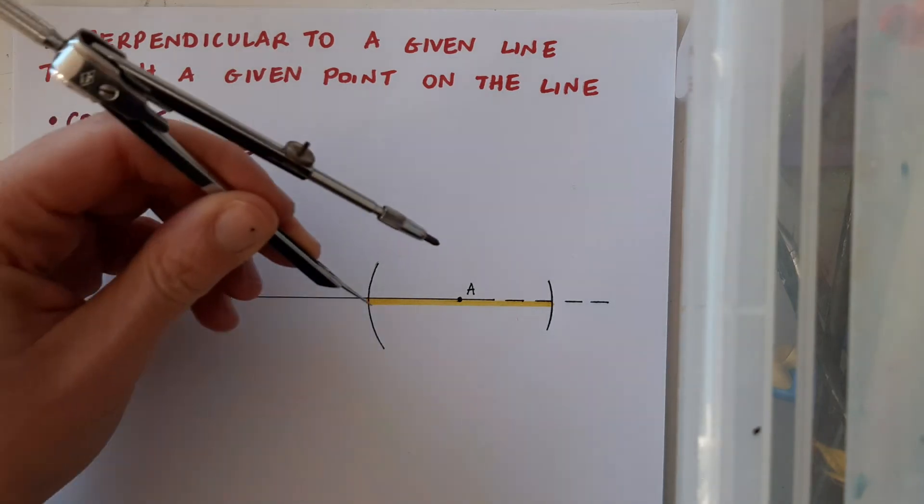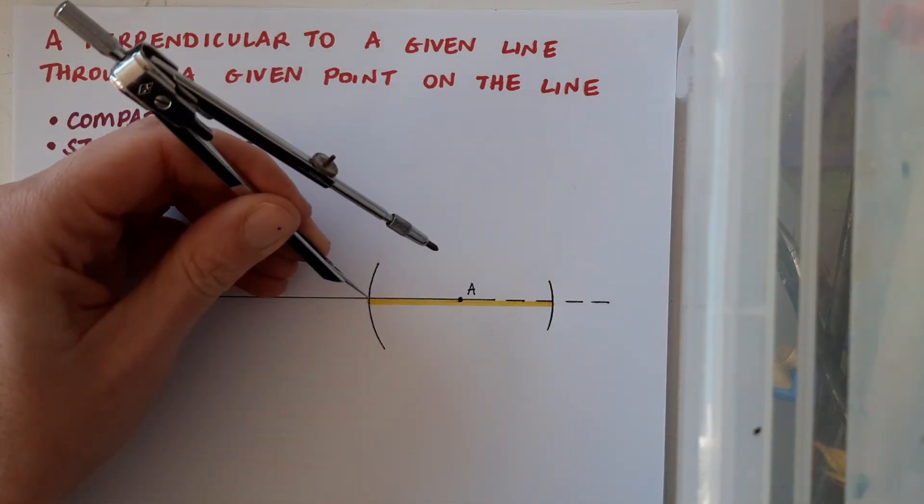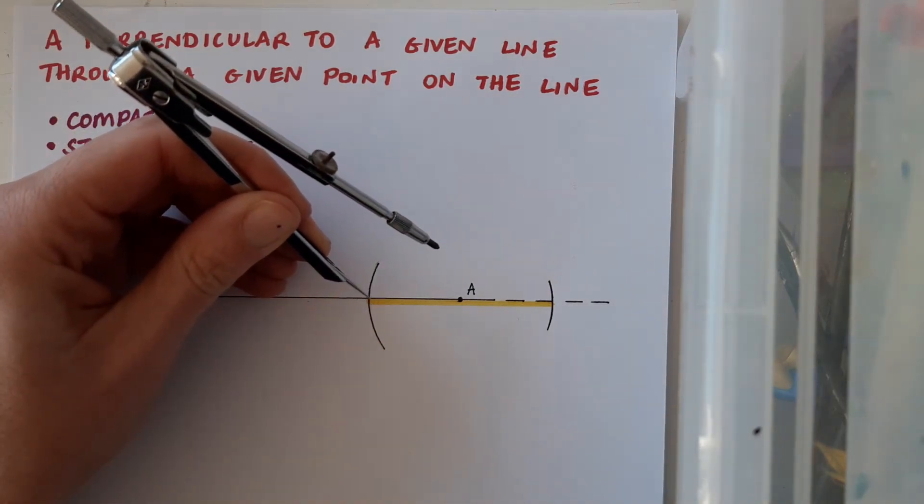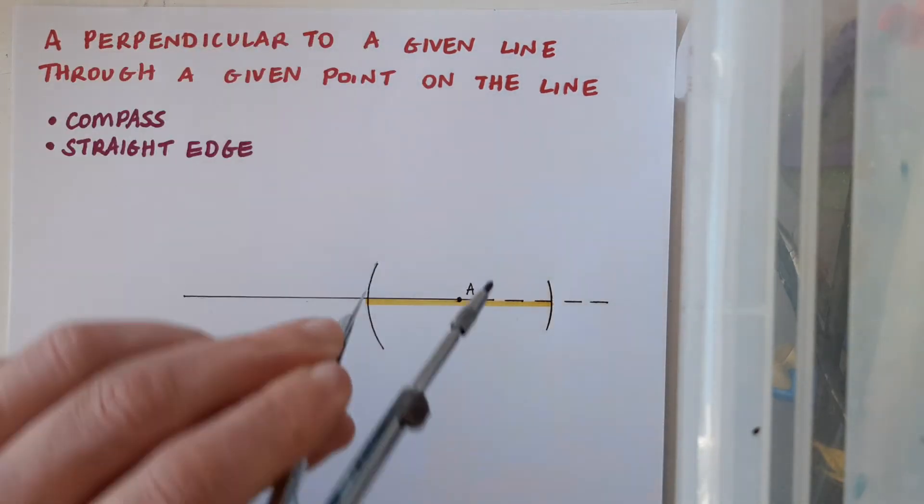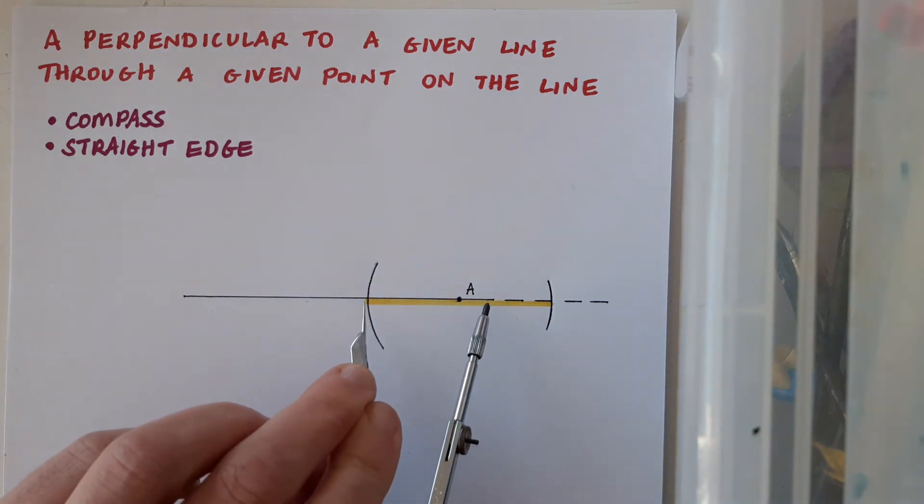That means going to this end of the line segment first of all and drawing an arc above and below. However, first of all make sure that you do adjust your compass so that it is more than half the length of this line segment.